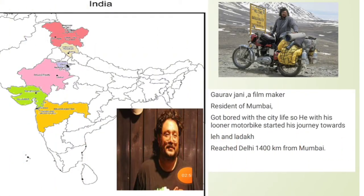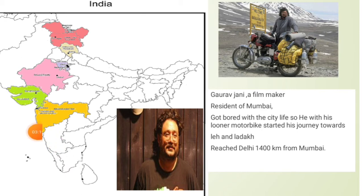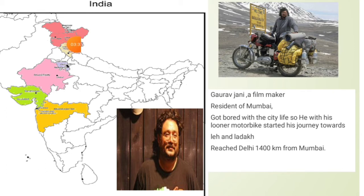Now let's start the chapter. This person is Gaurav Jani, a filmmaker and resident of Mumbai who got bored with city life. He started his journey towards Leh and Ladakh on his lunar motorbike. On India's map, we can see he started from Mumbai in Maharashtra, then passed through Gujarat, Rajasthan, Haryana, Himachal Pradesh, and finally reached Jammu and Kashmir, where his destination was Leh and Ladakh.